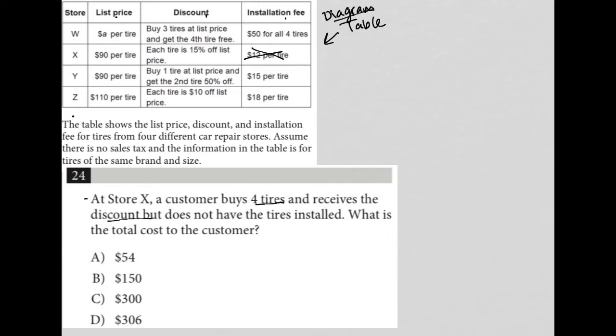This customer is going to pay $90 per tire. So that's just 90 times 4, which is $360. But each tire is 15% off.